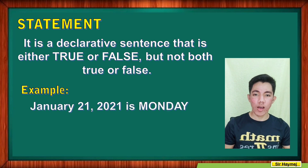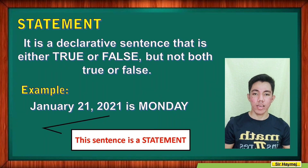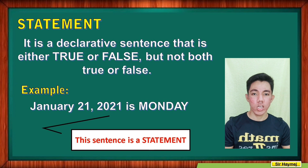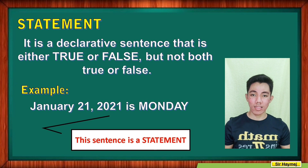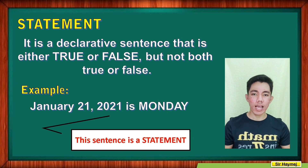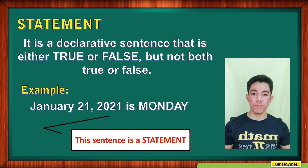Example: 'January 21, 2021 is Monday.' Is this sentence a statement? Yes, it is a statement. We may not know whether January 21, 2021 is actually a Monday — it could be true, or it could be false; perhaps looking at a calendar would show it is a Saturday. Based on the definition, a statement is a declarative sentence that is either true or false. We can say it is true and not false, or false and not true — so this sentence is what we call a statement.